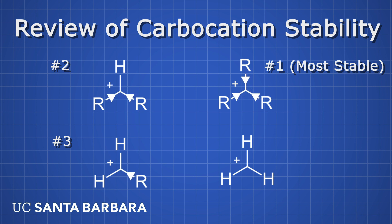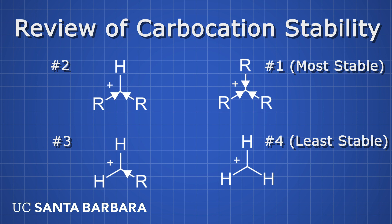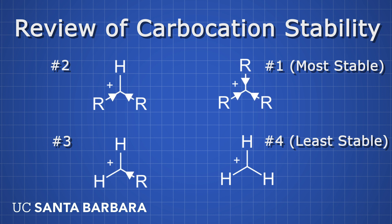There's a lot more to be said on the topic of carbocation stability. For example, your textbook or instructor may want you to know the relative stability of allylic carbocations, or carbocations attached to an aromatic ring. Consult your textbook or instructor, or perhaps a future video I make on more complicated examples of determining relative carbocation stability. A general rule of thumb, though, is that if there are resonance structures that allow electrons to be donated to your carbocation, that is generally a more stable structure than one that does not have such resonance structures.